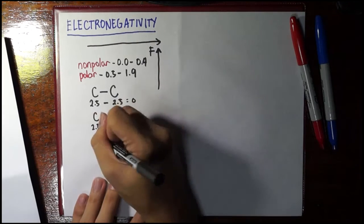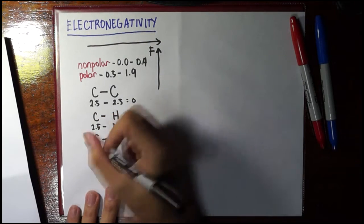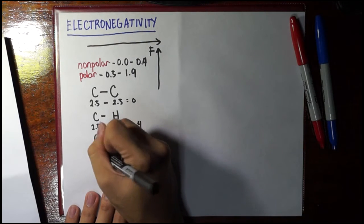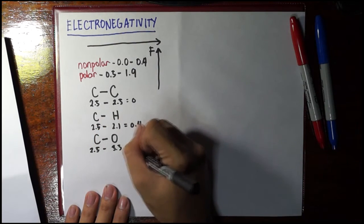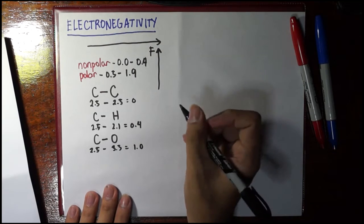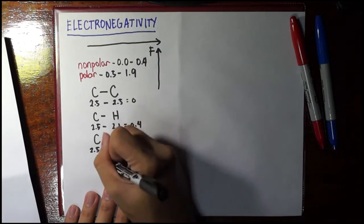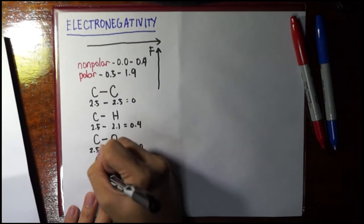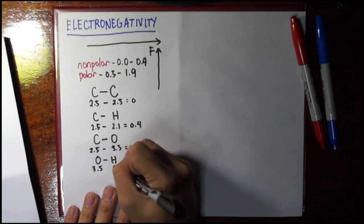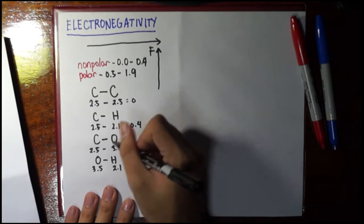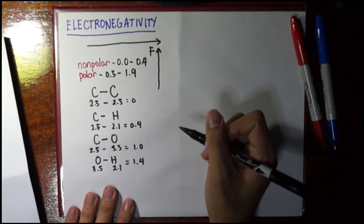But here, for example, C to O, oxygen is 3.5. The absolute value difference would be 1.0, correct? So this would now fall under polar, especially O-H also. Since we know that oxygen is 3.5 and hydrogen is 2.1, the difference is 1.4. This is even more polar than the C to O bond, all right?